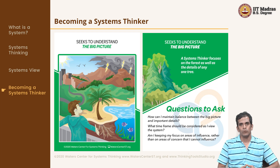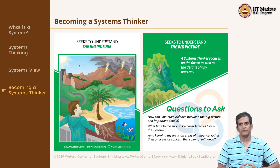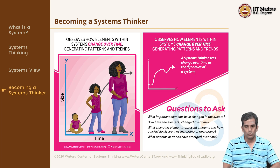By looking at both the details as well as the big picture, this policy of rainwater harvesting was formulated. This was a small-time activity which individual apartments could take up — it comes under the area of influence too. So it satisfies all the criteria that this systems thinking habit prescribes.